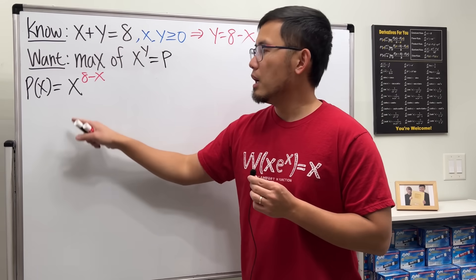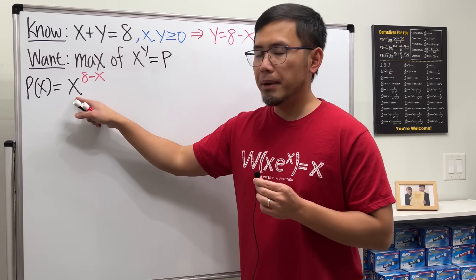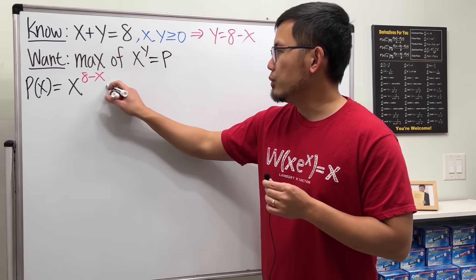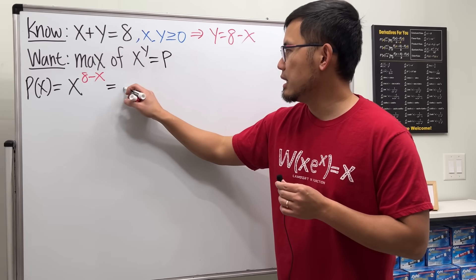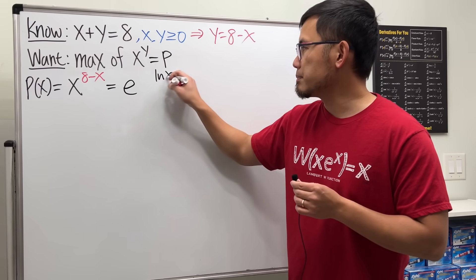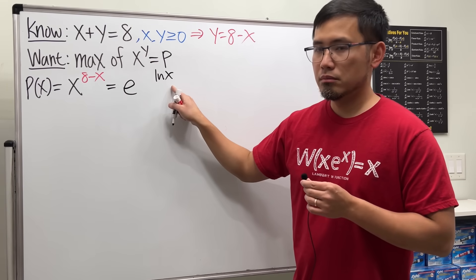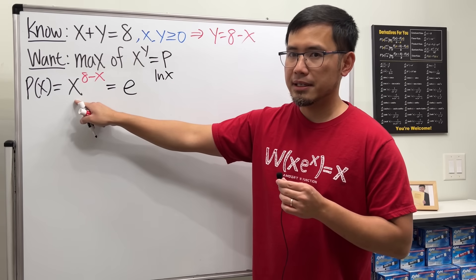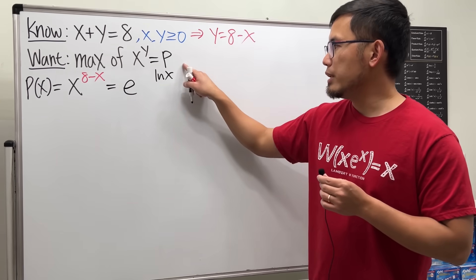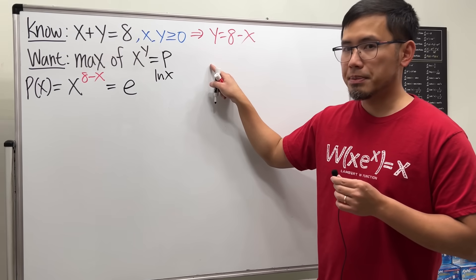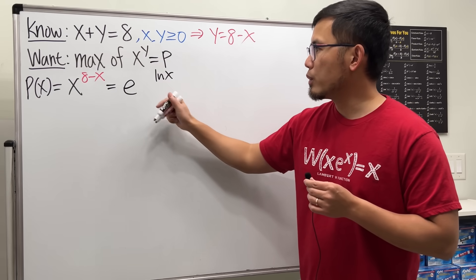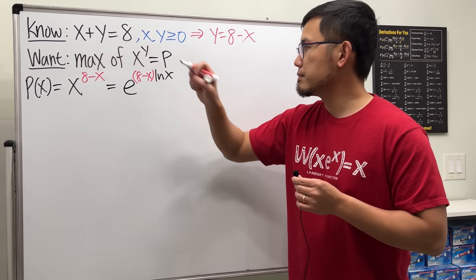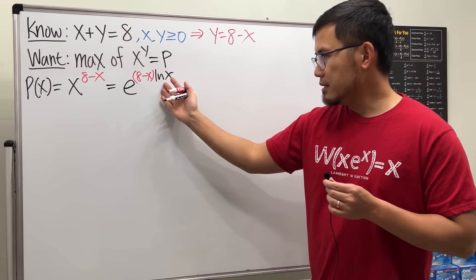To take the derivative of this, let's rewrite the base x as base e. To do so, we write x as e to the ln x power — e and ln cancel, we get the x back. Then raise that to the 8 minus x power and multiply the exponents, giving us e to the (8 minus x) times ln x.